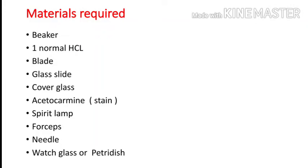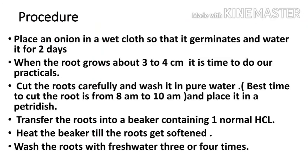Moving on to the procedure: place an onion in a wet cloth so that it germinates and water it for two days. When the root grows about three to four centimeters, it is time to do our practicals. Cut the roots carefully and wash them in pure water. The best time to cut the root is from 8 a.m. to 10 a.m. Place the roots in a petri dish or watch glass.